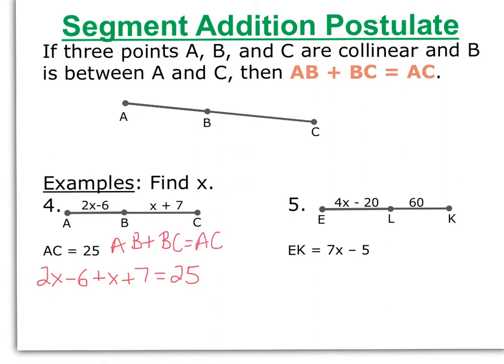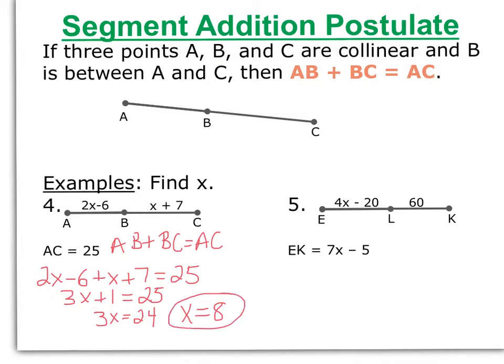If we add the two parts up, we'll get the whole line segment. So we bring back our algebra skills and combine like terms. I subtract 1 and get 3x equals 24, divide, and x equals 8. All it said was to find x, so we don't have to plug that back in to get the lengths of any of the line segments.